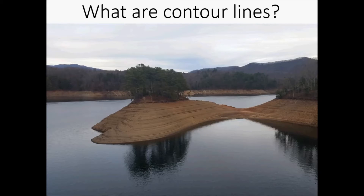A contour line connects points of equal elevation. The surface of a lake has a consistent elevation, so I'll use this example of a land formation in the lake to summarize contour lines. All of the land that touches the water will have the same elevation, which gives us a good base for the first contour line. The stratification, or the lines you can see in the soil, were created by the water in Fontana Lake in this picture, and are representative of contour lines because they connect points of equal elevation.